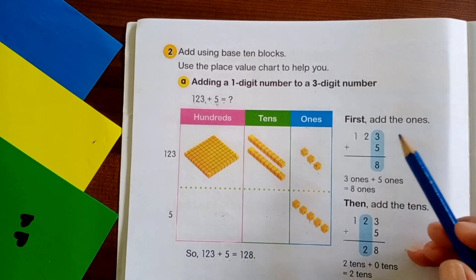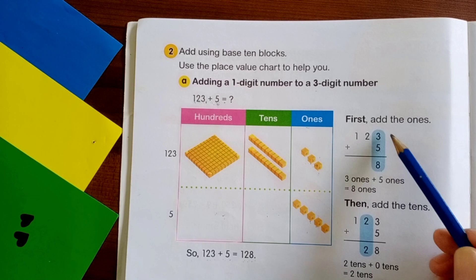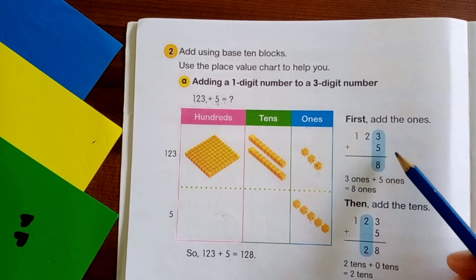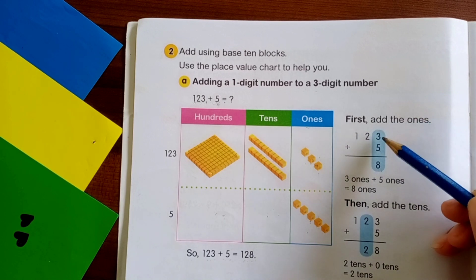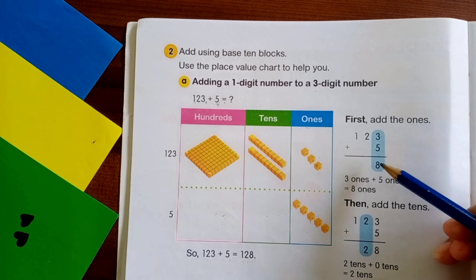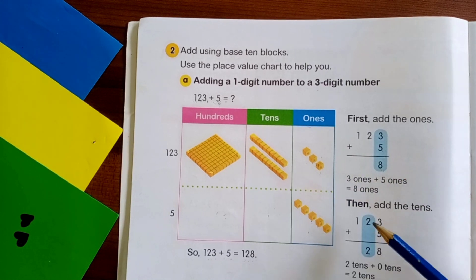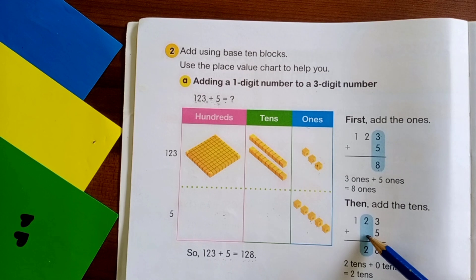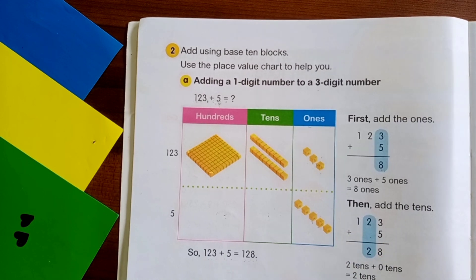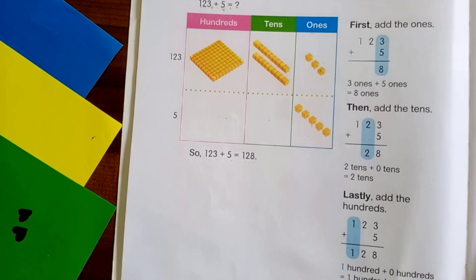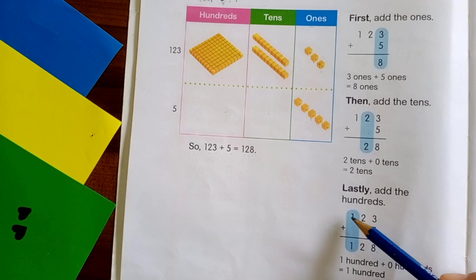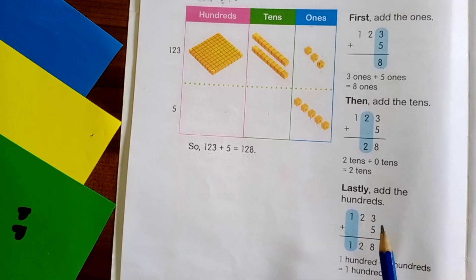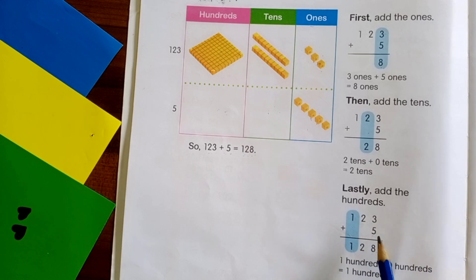After that we move to place value chart. I want you to always make place value chart. Start from ones. Three plus five is equal to eight. Next, because there is no tens here, so we just write two. Lastly, there is no hundreds here, so we write one. One hundred twenty-three plus five is equal to one hundred twenty-eight.